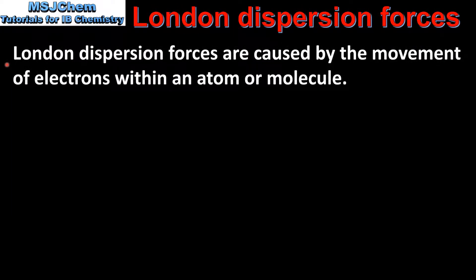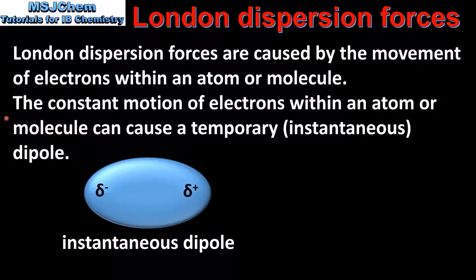So we'll start by looking at London dispersion forces. London dispersion forces are caused by the movement of electrons within an atom or molecule. The constant motion of electrons within an atom or molecule can cause a temporary or instantaneous dipole. On the left we can see an example of an instantaneous dipole within a molecule. At a certain point in time the electrons move to one side of the molecule, so one side has a partial negative charge and the other side has a partial positive charge. It is this movement of electrons that causes an instantaneous dipole in the molecule.